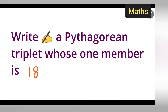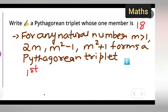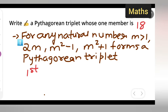In today's class of mathematics, the question is taken from class 8th mathematics. The question is: write a Pythagorean triplet whose one member is 18. Let's write down the question and then the solution.